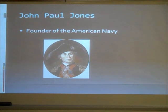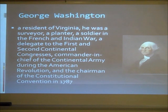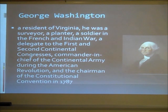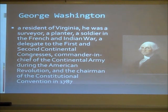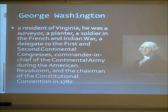John Paul Jones was the founder of the American Navy. George Washington was a resident of Virginia, a surveyor, a planter, and a soldier in the French and Indian War — where he saw how the British fought and used their tactics against them in the American Revolution. He was a delegate to the first and second Continental Congresses, commander in chief of the Continental Army during the American Revolution, chairman of the Constitutional Convention in 1787, and of course our first president.